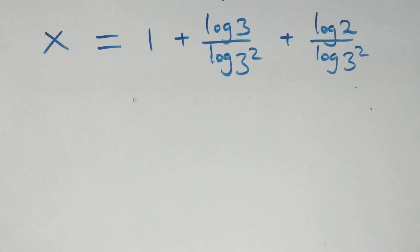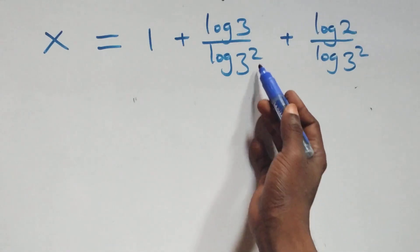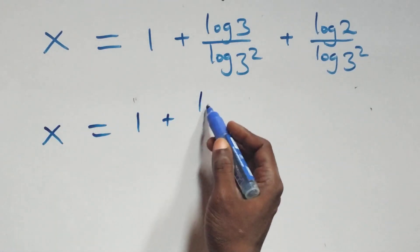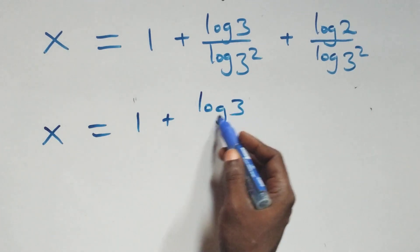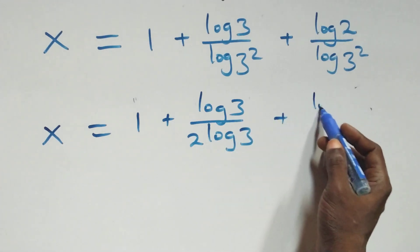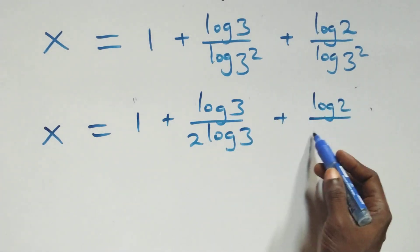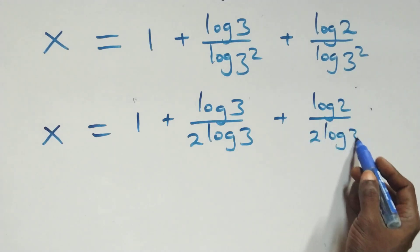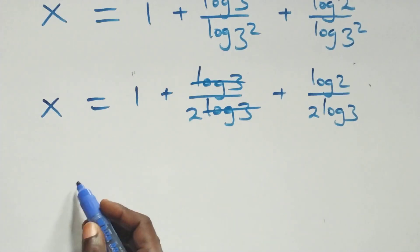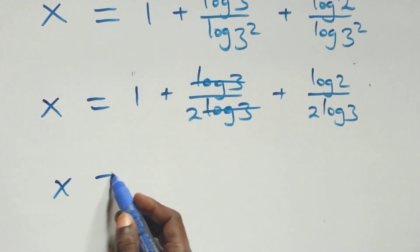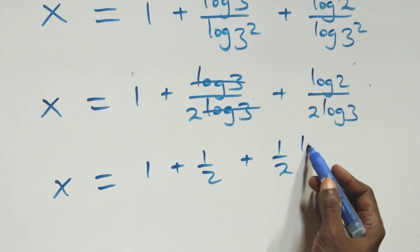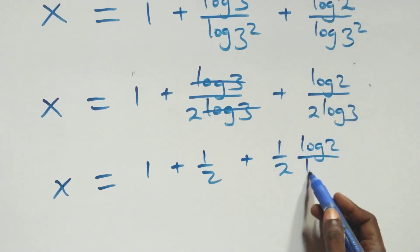Here, we have log 3 cancelling, and 1 over 2 is left here, which implies x equals to 1 plus 1 over 2, plus 1 over 2 times log 2 over log 3.